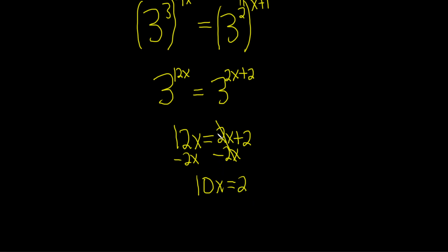To finish solving for x, since it's being multiplied by 10, we can just divide by 10. That gives us x equals 2 over 10, so 1 over 5. And that would be the final answer. I hope this video has been helpful.